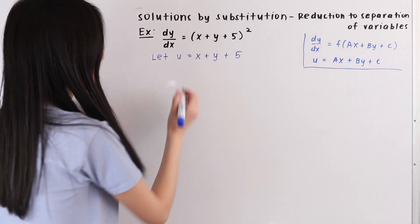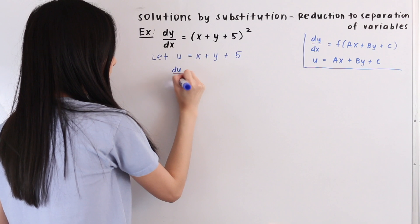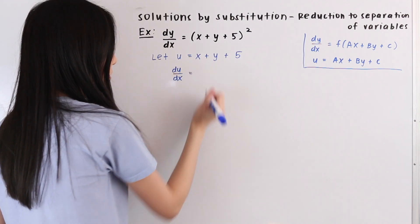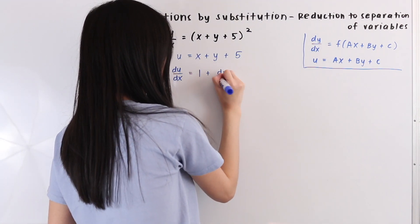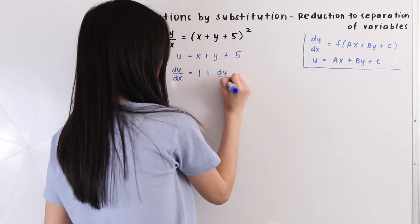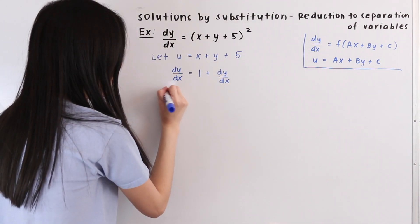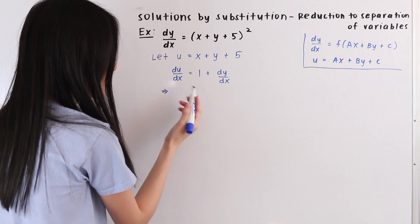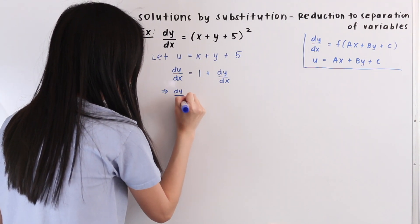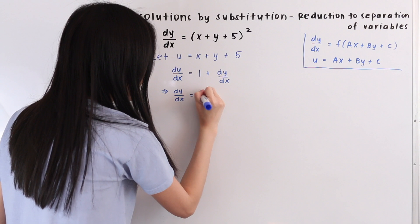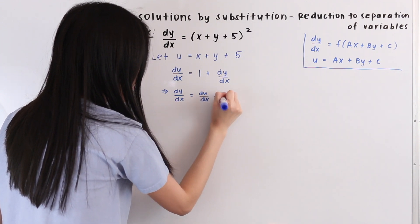Now let's take its derivative, so we have du/dx is equal to 1 plus dy/dx. And from here, subtracting 1 from both sides, we have dy/dx is equal to du/dx minus 1.